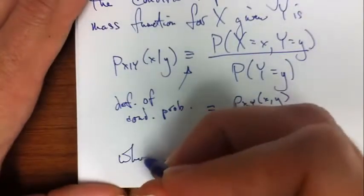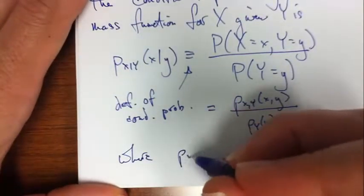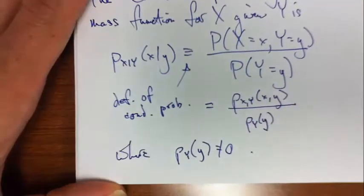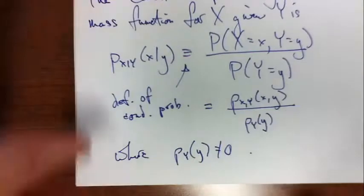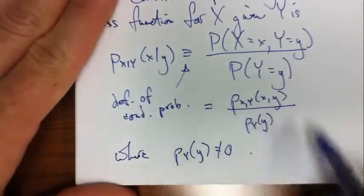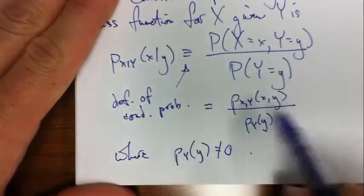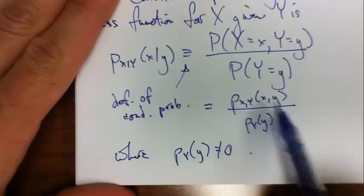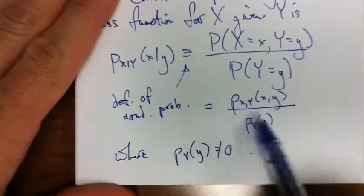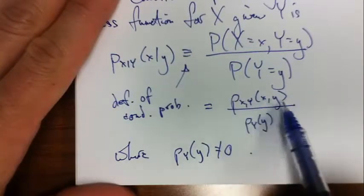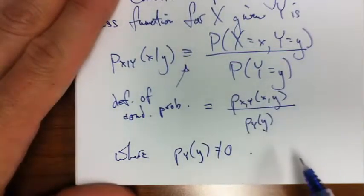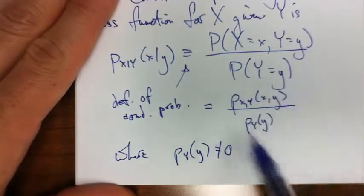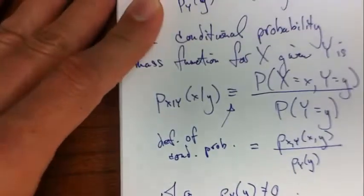Of course, another way to write that now using our notation here with joints and marginals, we can write that as p of x and y of x and y over p sub y of little y. Where, of course, the probability that y takes on the value of little y can't be 0. If it's equal to 0, then we have to do something else.